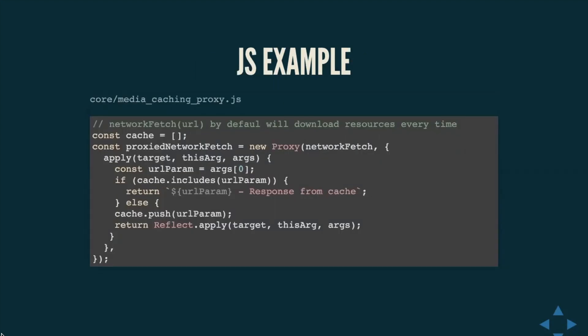Let's take a look at a JavaScript example — a media caching proxy. Network fetch by design doesn't support caching; it downloads resources every time it's invoked. So we need to provide our own caching mechanism: we create a proxy that first checks if we have the URL parameter in our cache. If we do, we return the response from cache; if not, we make the actual request. It's important to understand there are cache invalidation limitations to be aware of, but for the most basic example this will do just fine.